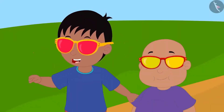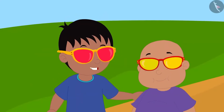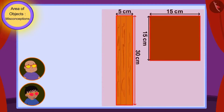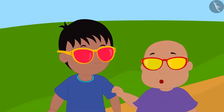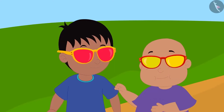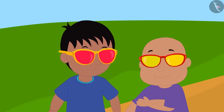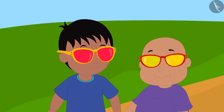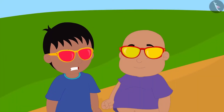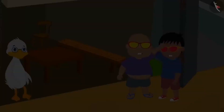Raju first looked at the top surfaces of both tables with his glasses and could see the measure of the sides of both tables. Raju excitedly told Babalu: the length of the longest side of the rectangular table, 30 cm, is much more than the length of the square-shaped table's edge, 15 cm. That means the rectangle-shaped table is much larger than the square-shaped table. Babalu laughed and said: Raju, it is not necessary that because the rectangle-shaped table's edge is longer, the rectangle-shaped table is larger.